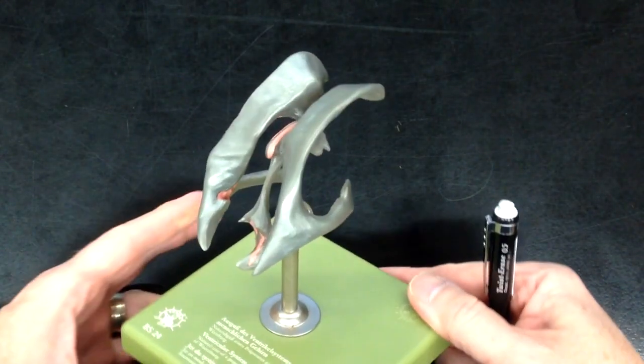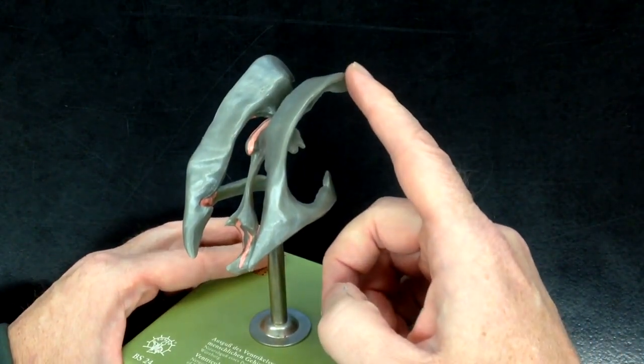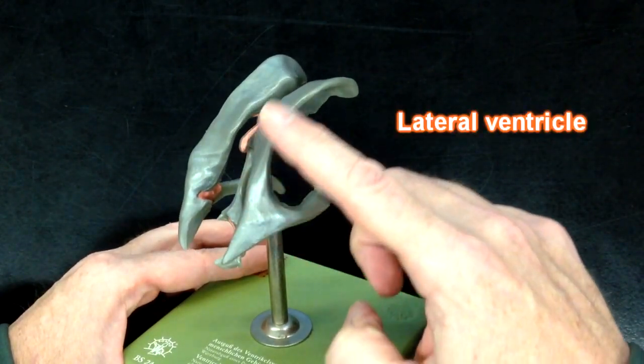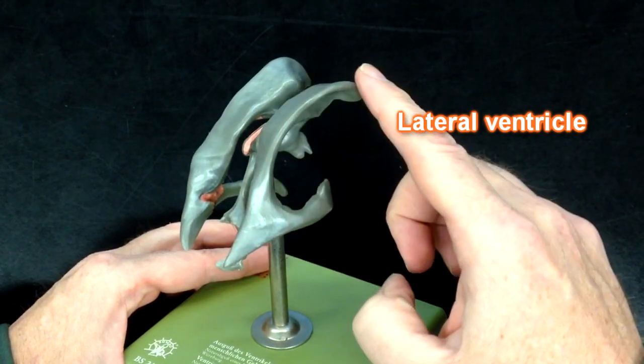So let's run through some of the structures here, and I'll move this around so that we can see it better. This right here would be one of the lateral ventricles, and you can see its shape like so.